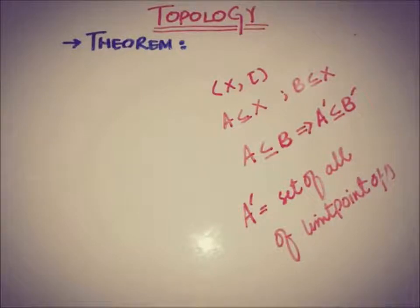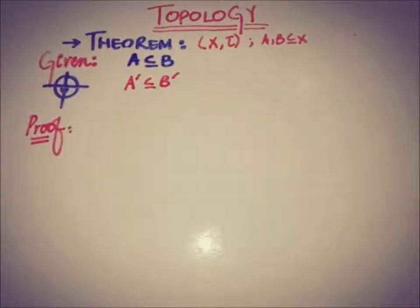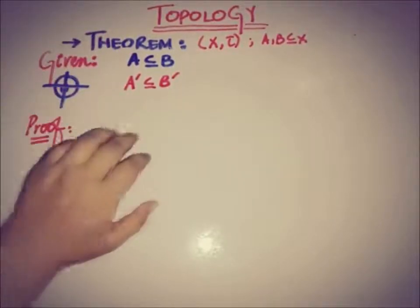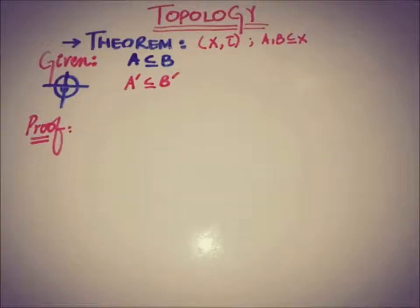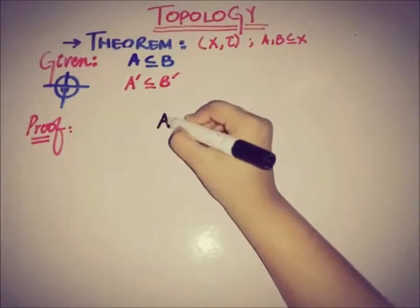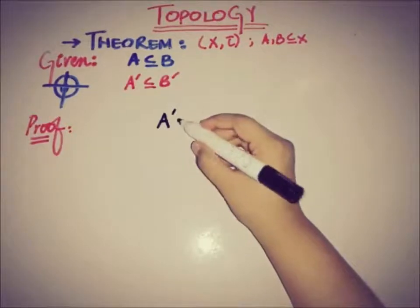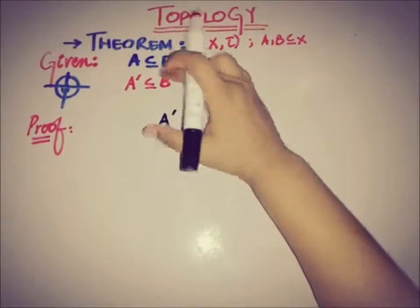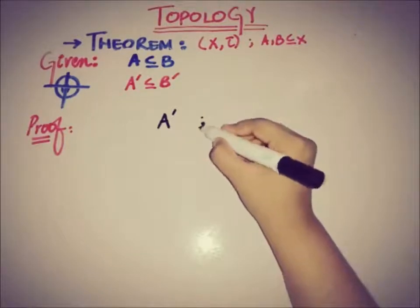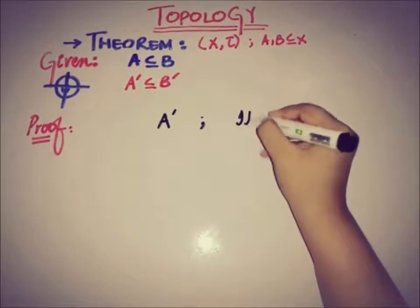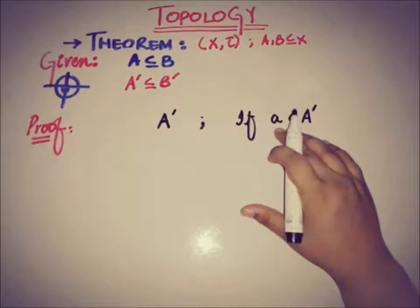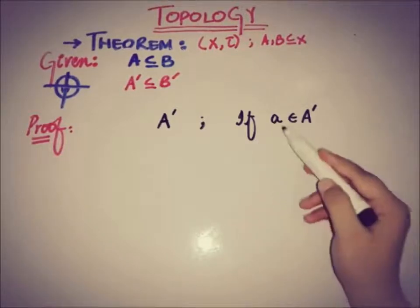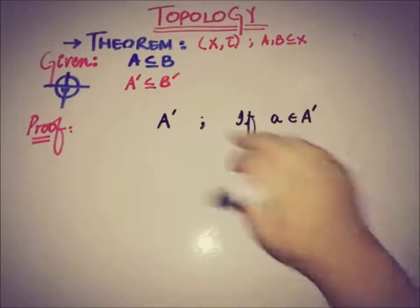Heading towards the proof: the given condition is A ⊆ B, and the target is that the accumulation set of A is a subset of the accumulation set of B. The first step is to use the definition of the limit or accumulation point. If A′ is the set of all limit or accumulation points of set A, then by definition, if a point belongs to that accumulation set, it is a limit point of the set A.